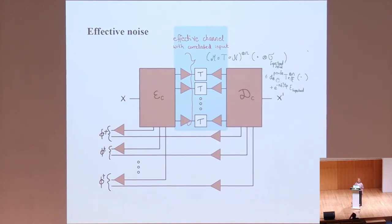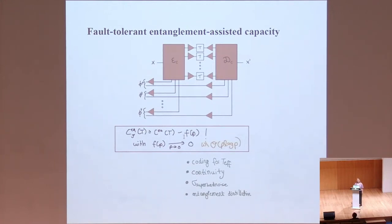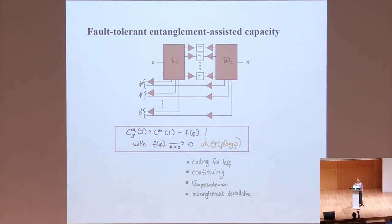For this we had to use an extra approximation where we control the correlation in this super-bad noise with some payment, so that we get an effective channel without this correlation. This again has to do with the probability of the noise, and then you get some extra super-bad channel that you don't want to use. But in the end, we obtain a result where the fault-tolerant entanglement-assisted capacity is lower bounded by an achievable rate, which is given by the noiseless version minus some function of P.